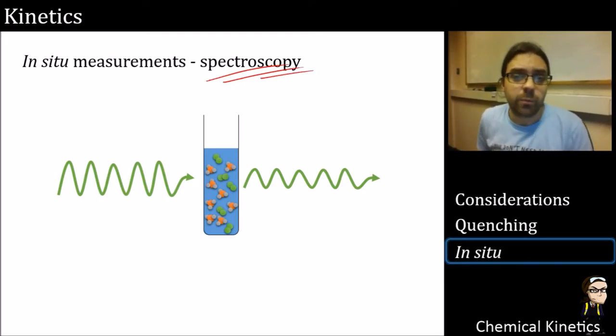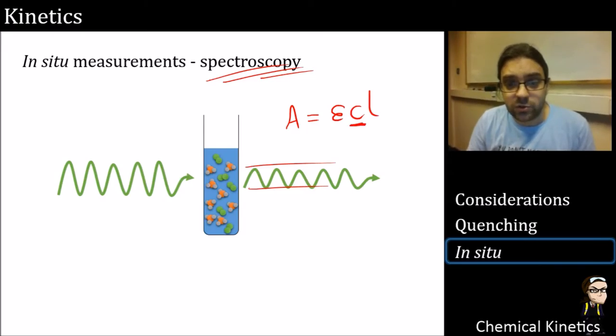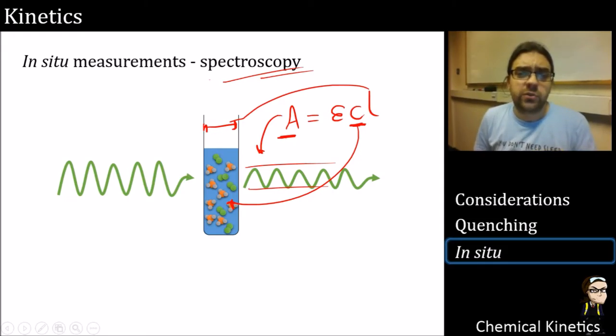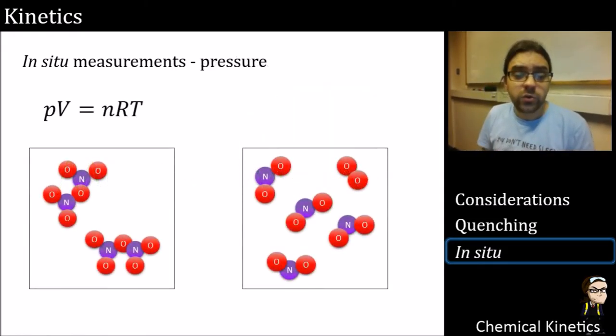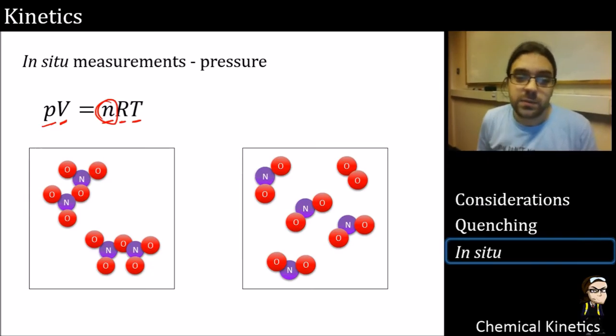Obviously, spectroscopy is going to be a big one. Now in practice, this is probably the single biggest one that will be used for kinetics. So we want to shine some light through, and we see the intensity has gone down. So remember, via Beer-Lambert law, we can get a concentration out of the absorbance. So the absorbance equals concentration times path length times epsilon. So we can figure out a concentration from spectroscopy.